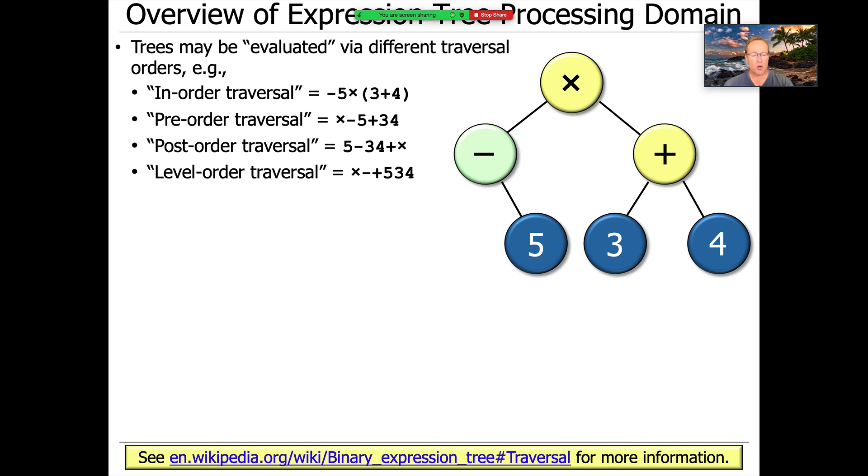So you can see in that case it would be times minus plus five three four. So those are different ways of traversing a tree and some of them make it much easier to do evaluation of the tree in order to figure out what its values are.